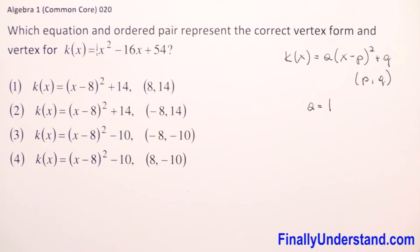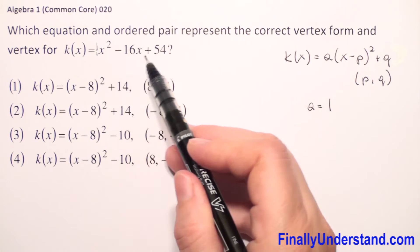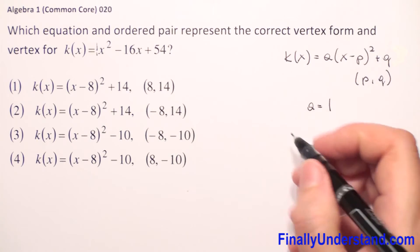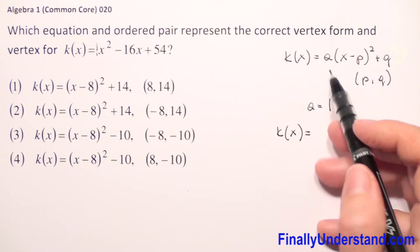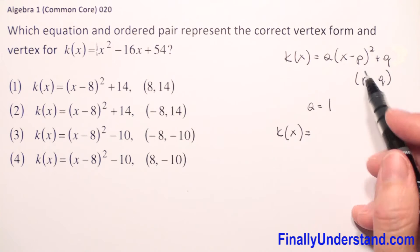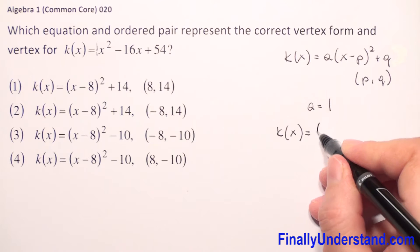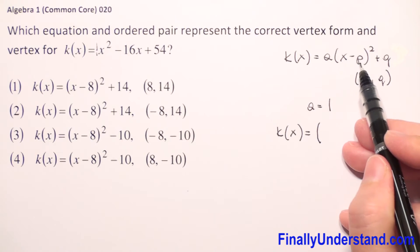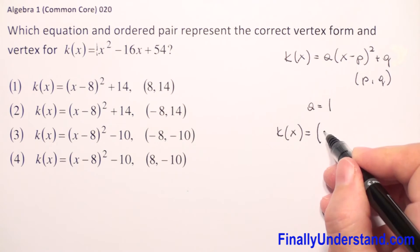First we need to change this form to vertex form. k(x) equals... we don't have to write the 1 because it doesn't change the value when we multiply by 1. We open parenthesis. First we have x minus p to the second power, so always we have to have x first.